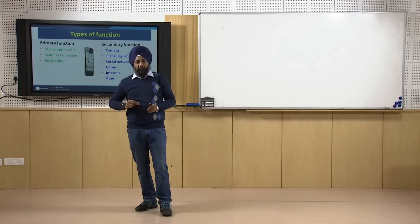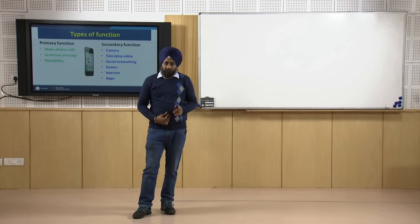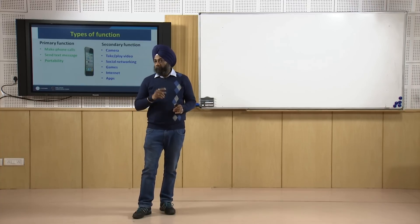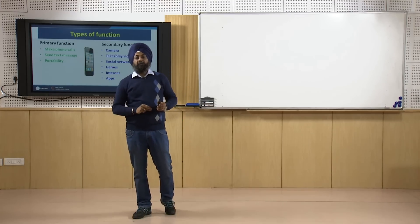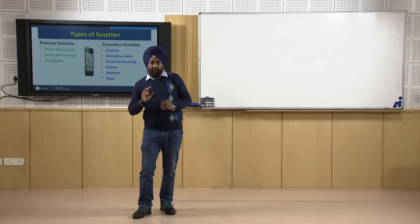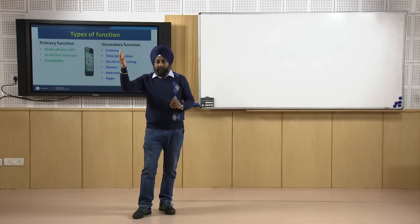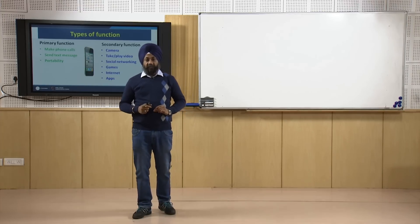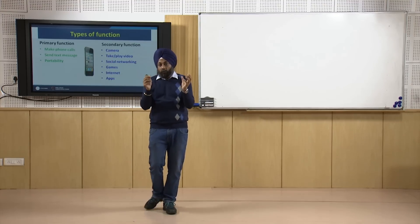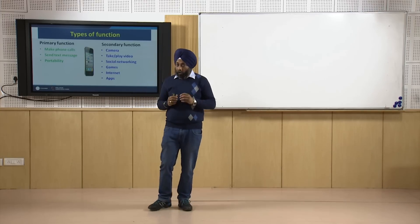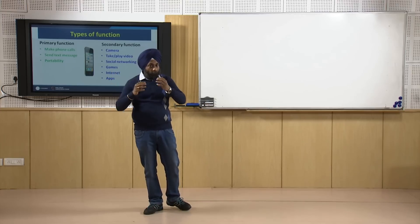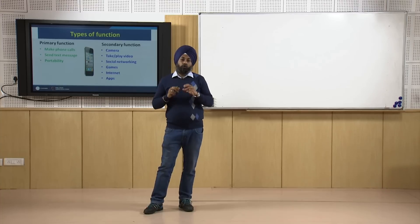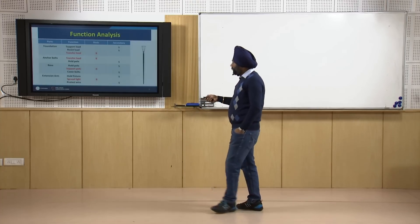Some products have both use and esteem functions. For example, a tie pin: it holds the tie in place, giving it a use value, but a diamond-studded tie pin from a high-end branded company also has esteem value. As a product designer, you must decide how much use function and how much esteem function the product should have, so that it remains cost-competitive in the market.